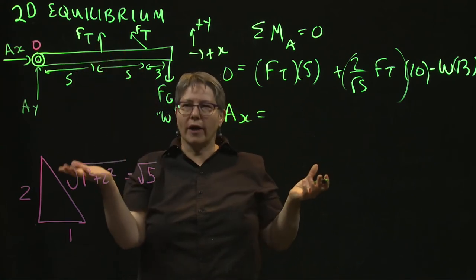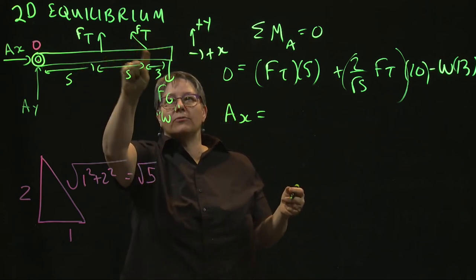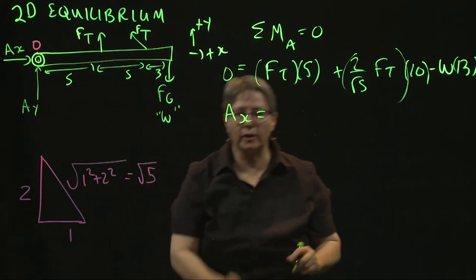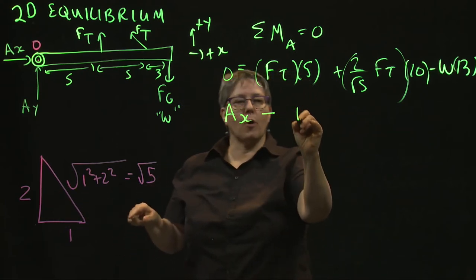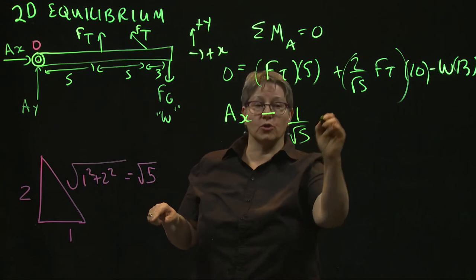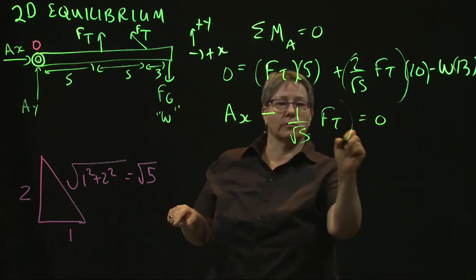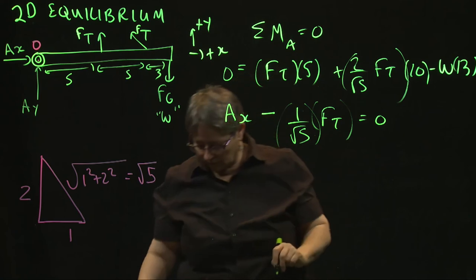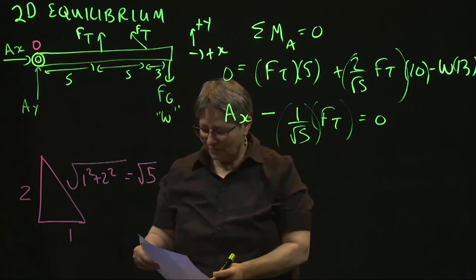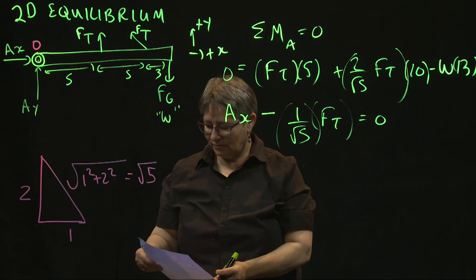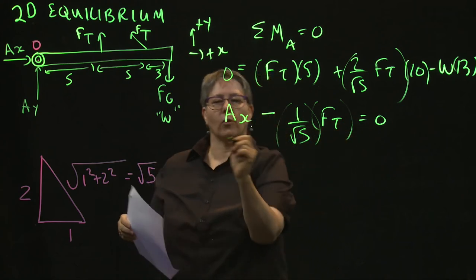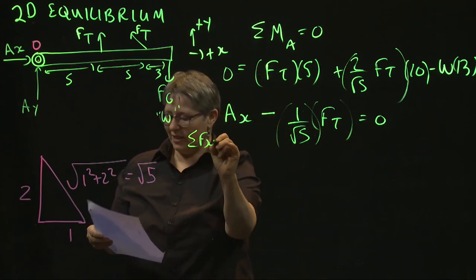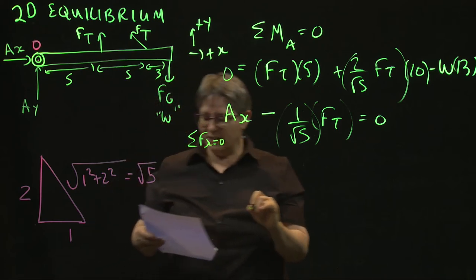And so A of x, that's definitely positive. Well, those are in the y direction. So this is negative, this component. So, excuse me, Ax minus the component that way is one over square root of five FT equals zero. That's zero.